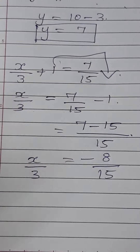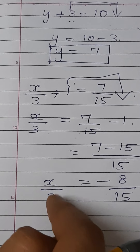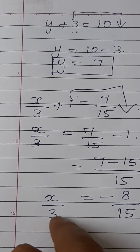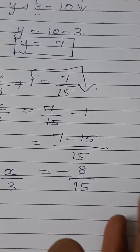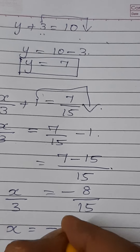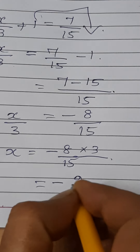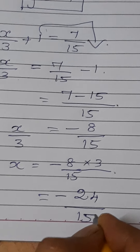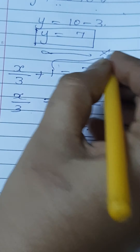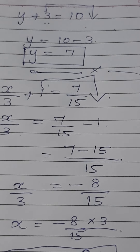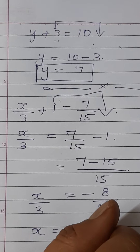Now, x by 3 equal to minus 8 by 15. Since 3 is in the denominator on the left side, we bring it to the right as multiplication: x equal to minus 8 by 15 into 3, which gives minus 24 by 15. So x equal to minus 24 by 15 is the answer. Thank you for watching this video. Please like and subscribe.